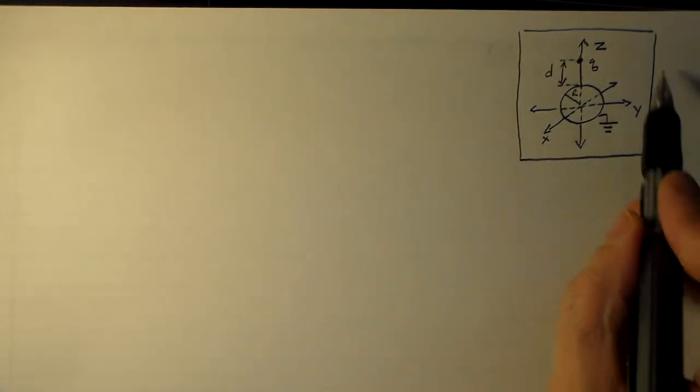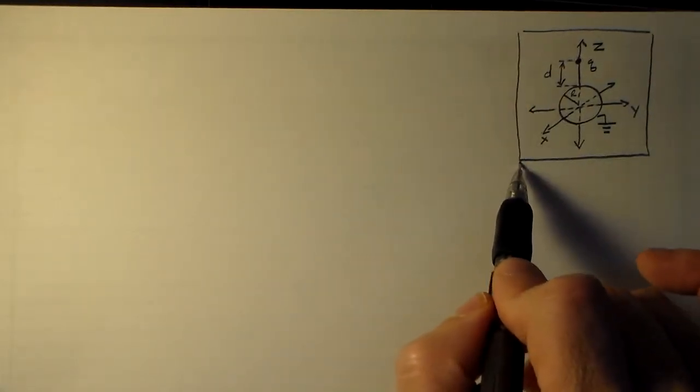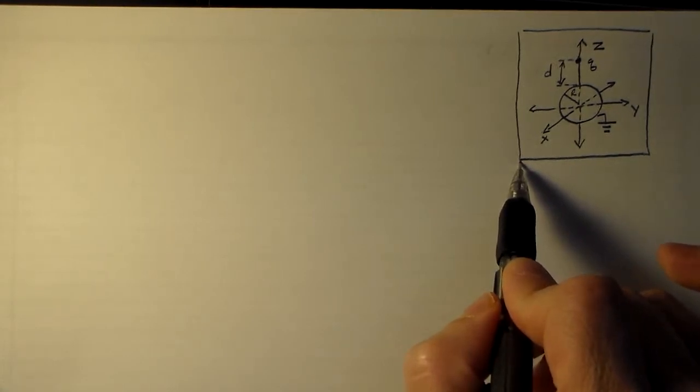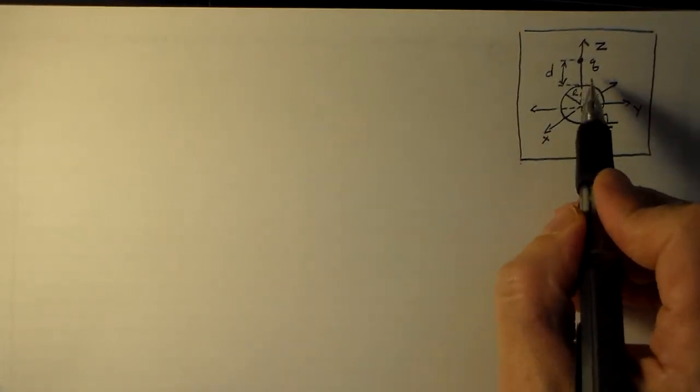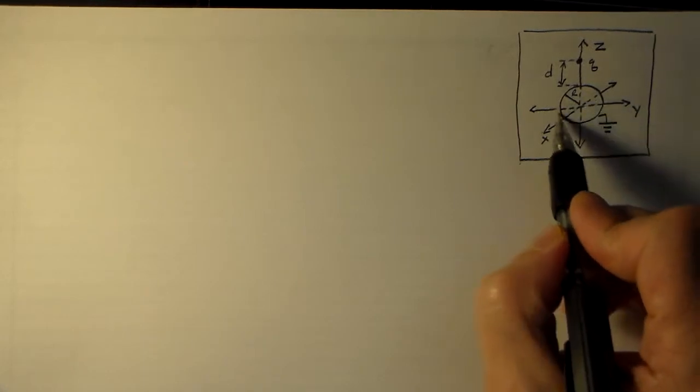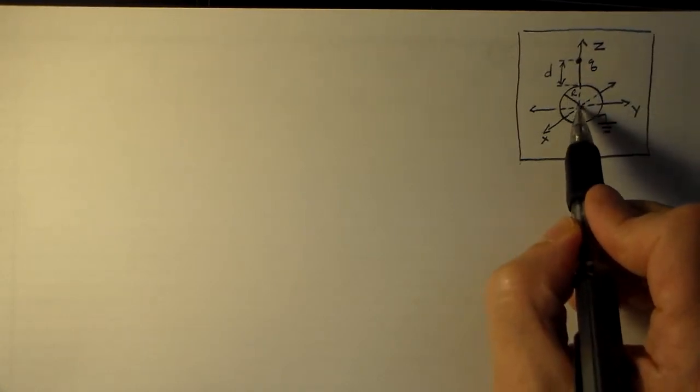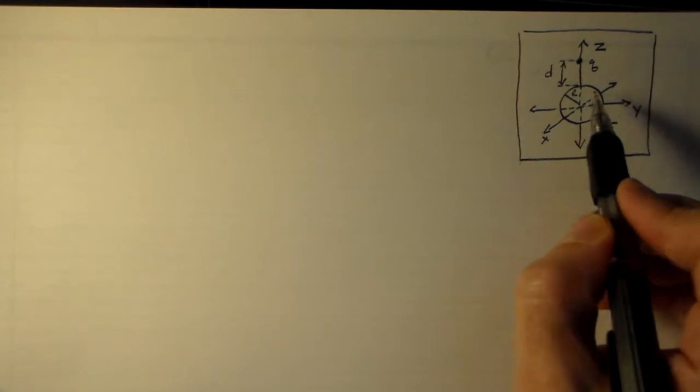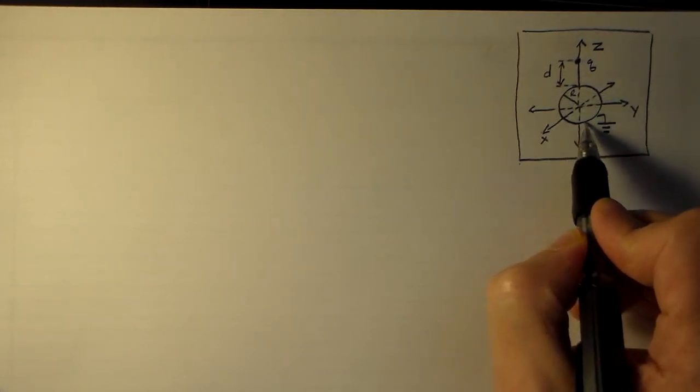Okay, now I've tried to draw everything that we need to know about the problem up here in this corner. So we've got a charge, our charge up here, that's R plus D above the origin. Then around the origin with a radius R we have a ground conducting sphere. So that should be enough information for the rest of the problem.